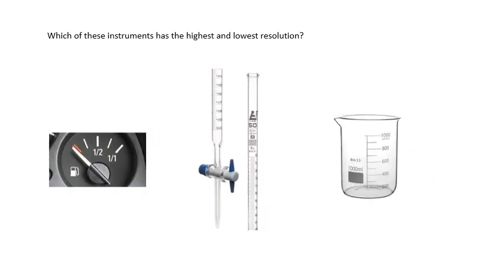Which of these instruments has the highest and lowest resolution? Now, these are all measuring volume and again, it depends on the application. The resolution of the petrol gauge is, I don't know, it'll tell you if you've got like a quarter, an eighth of a tank of petrol. That's all you need. You don't need to know how much petrol you've got to the nearest milliliter.